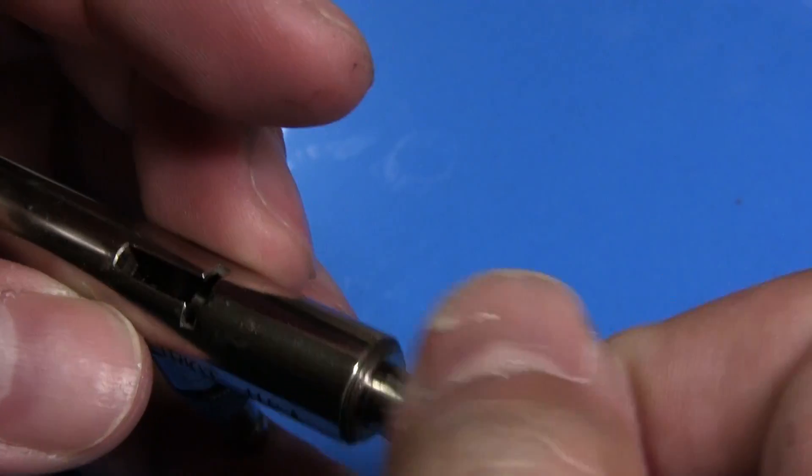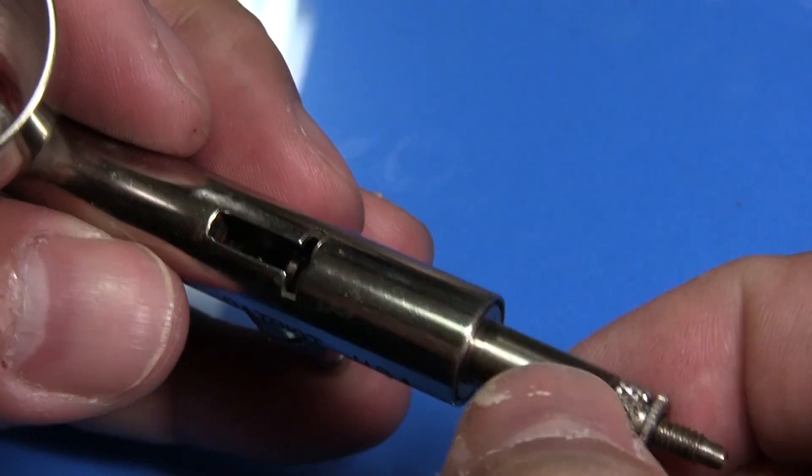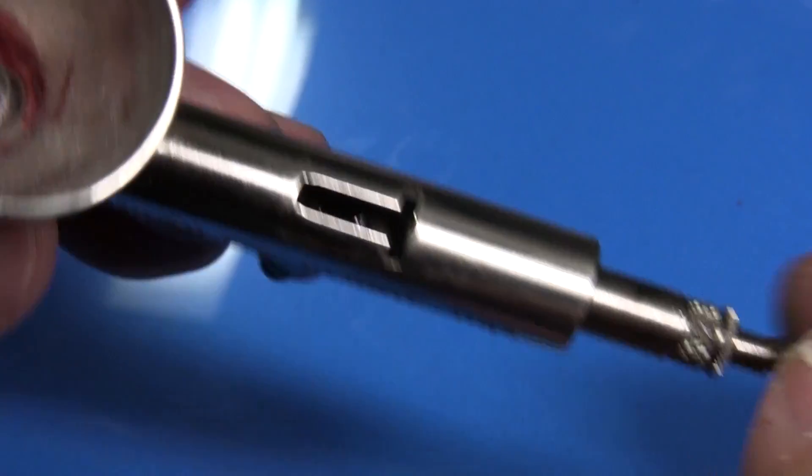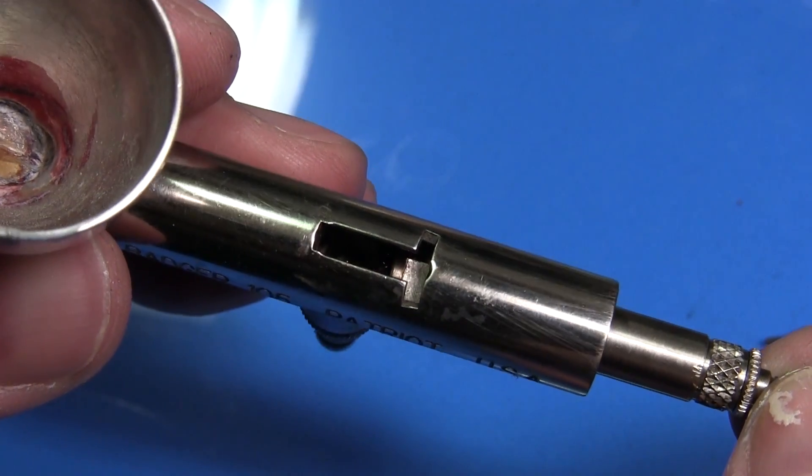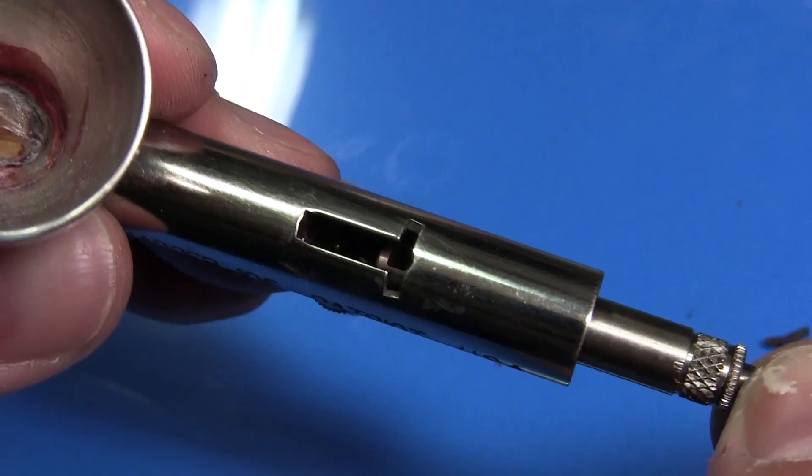Screw the needle tube assembly back into the body, but not all the way. Stop just as you see the tube shank through the lever cut out. Make sure the shank is pulled back also. It has a tendency to move forward as you insert the needle tube.